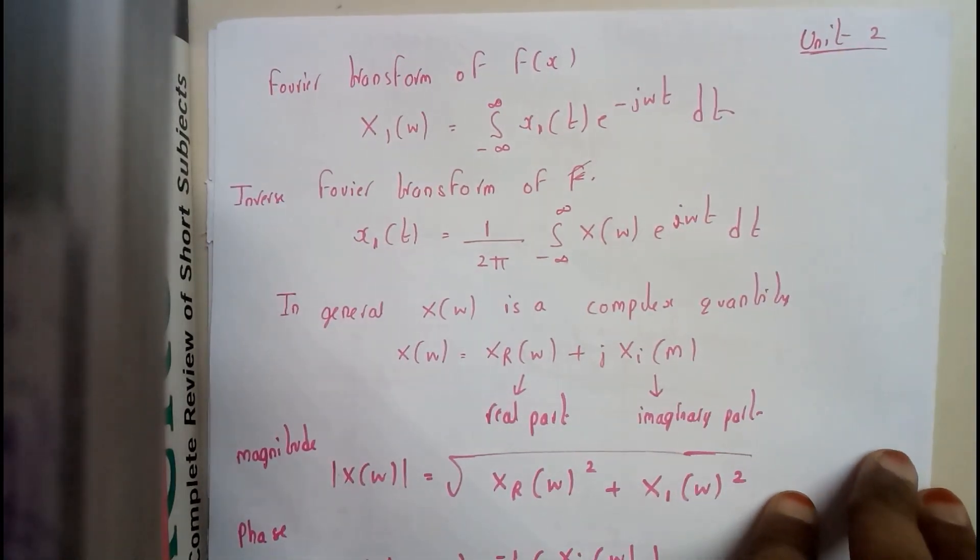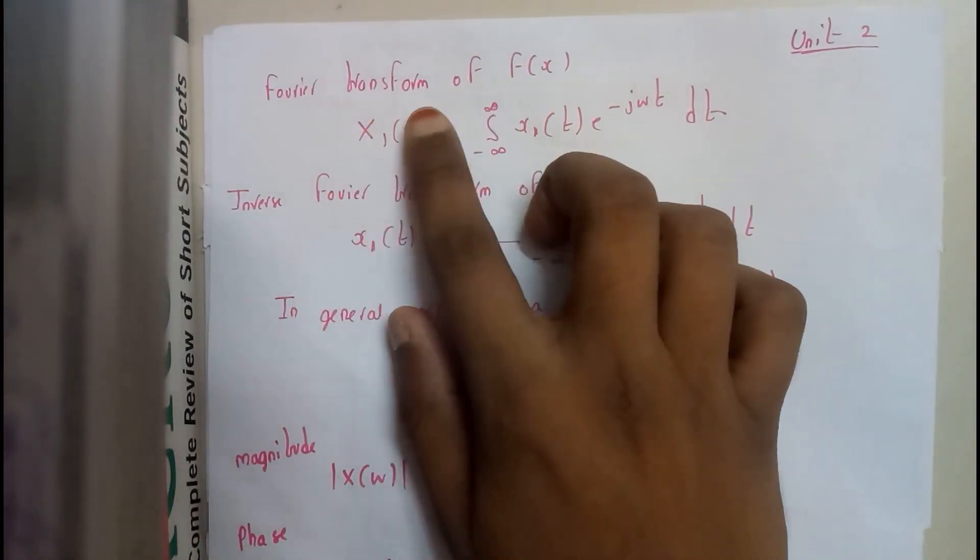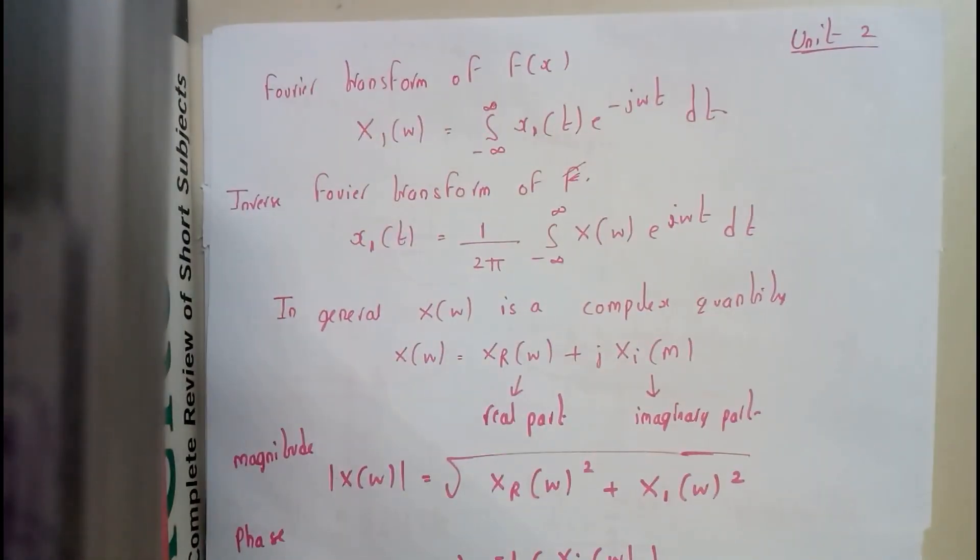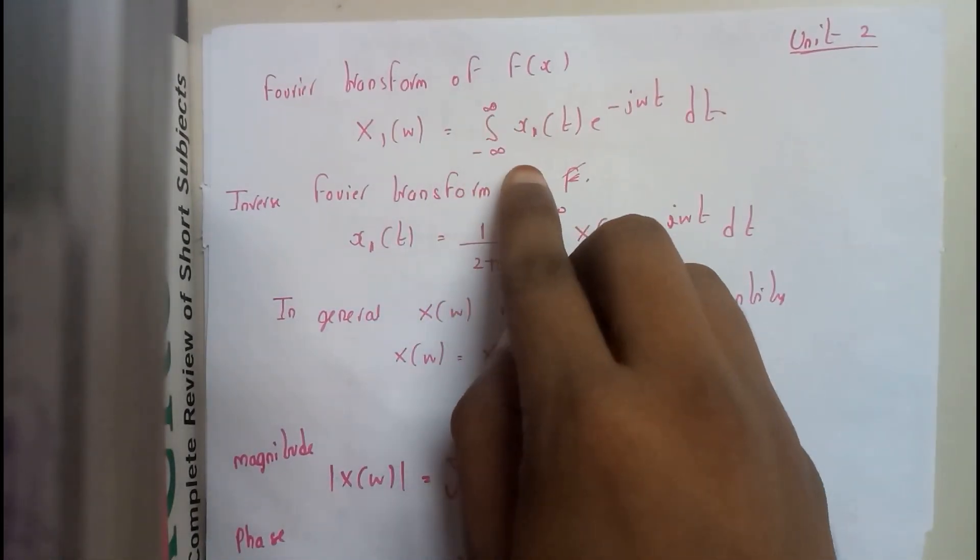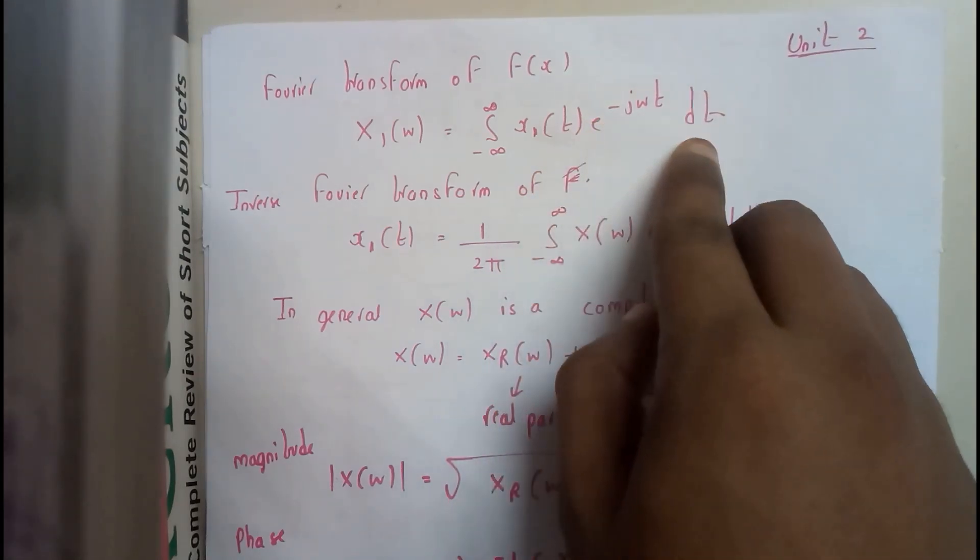In this we will be going through the important formulas. So one of the few important formulas in Fourier transform is what is Fourier transform. Fourier transform of f(x) is X1(ω) equals integral minus infinity to infinity x1(t) e to the power of minus j omega t dt.